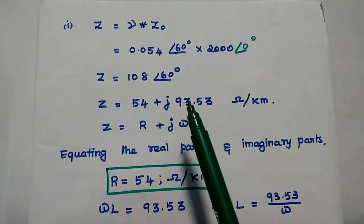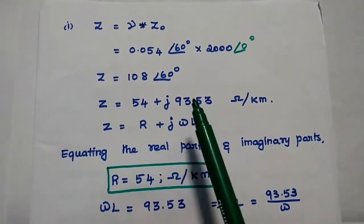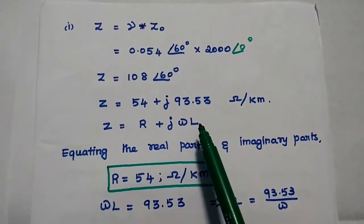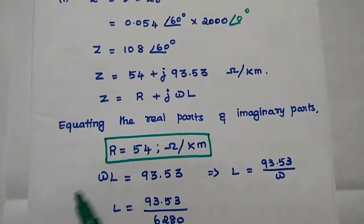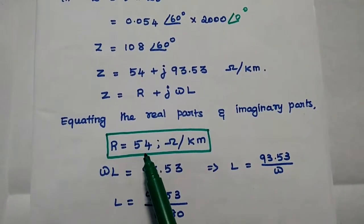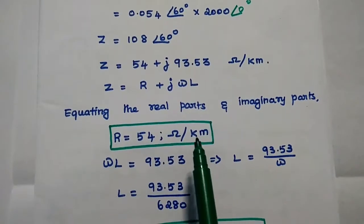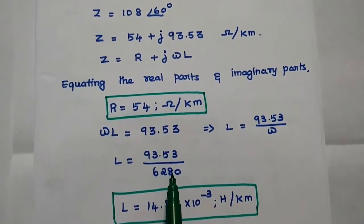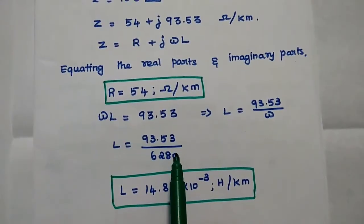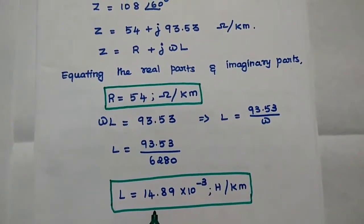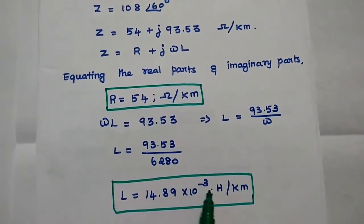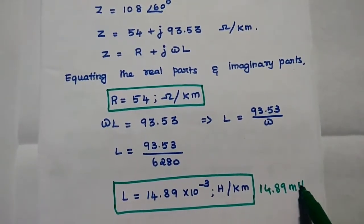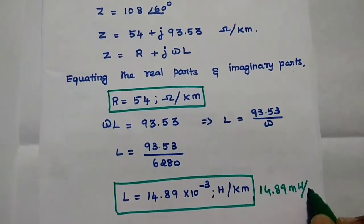After converting polar form to rectangular form, we have the real part and the imaginary part. Z can be represented as R plus J omega L, so we equate the real and imaginary parts. The resistance R is equal to 54 ohm per kilometer. Omega L is equal to 93.53, so moving omega to the denominator and substituting its value, inductance L is equal to 14.89 into 10 to the power of minus 3 henry per kilometer, or 14.89 millihenry per kilometer.